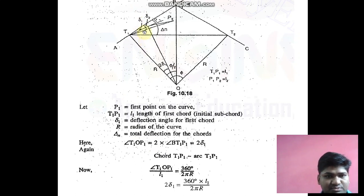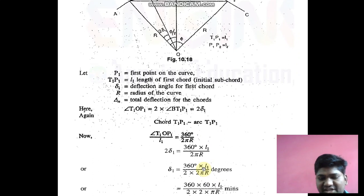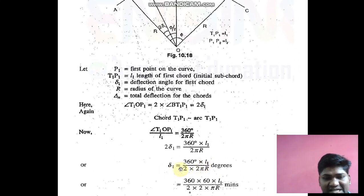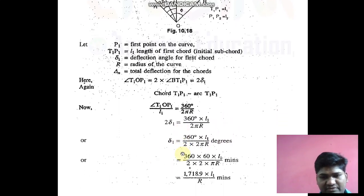Angle T1OP1 equals twice the angle delta1. This is a property of triangles. I have substituted that value here: T1OP1 equals twice delta1. After rearranging, I've got the formula delta1 = 360° × L1 / (2 × 2πr). The answer is in degrees.